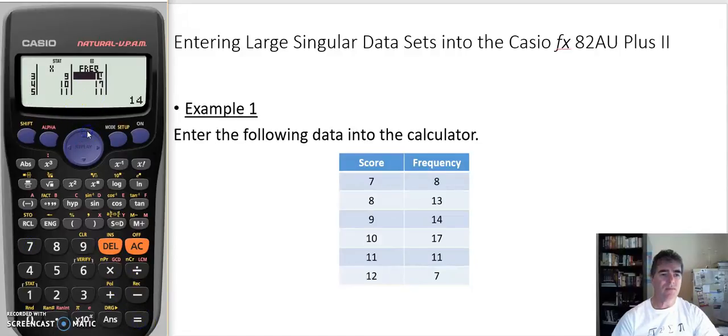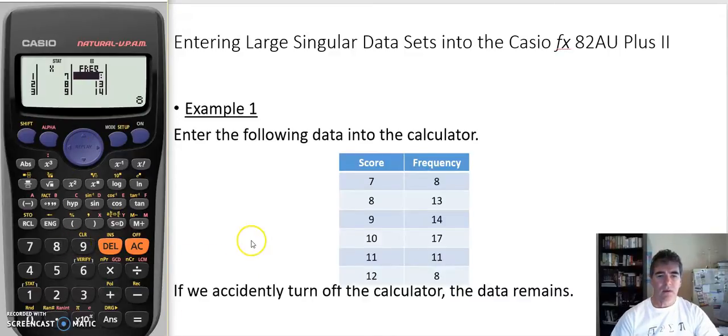At this point we've got our data in. Now what if we accidentally turn off our calculator before we're finished? Well, unfortunately my simulator here won't turn off, so I can't actually show that. But if you turn it off, you'll still be in statistics mode. The data that you've just put in will remain. The only time your data will go is once you get out of statistics mode. Just be aware of that, so if we turn it off and we think we haven't finished with the question or there's something else we can do, then just turn it back on and your data is all still there.